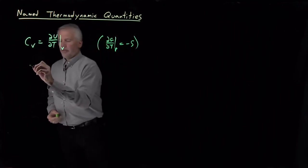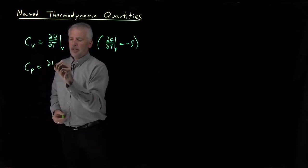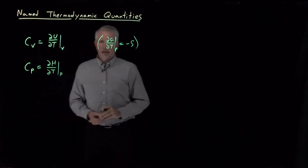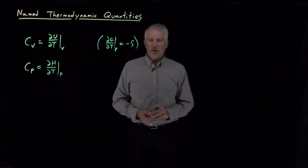Some others that fall in that category: if we didn't ask for dU/dT, but dH/dT, and if we do it at constant pressure, that of course is the constant pressure heat capacity CP.